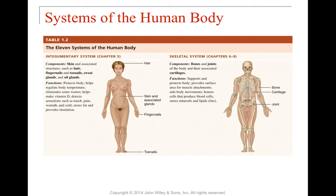The integumentary system detects sensations including touch, pain, warmth, and cold, and just beneath the skin we store fat to provide insulation. The skeletal system comprises all the bones, joints, and cartilages of the body. Its functions include structural support, protecting the body, providing areas for muscle attachment to aid with body motion, housing specialized cells that produce blood, and storing minerals like calcium and lipids.